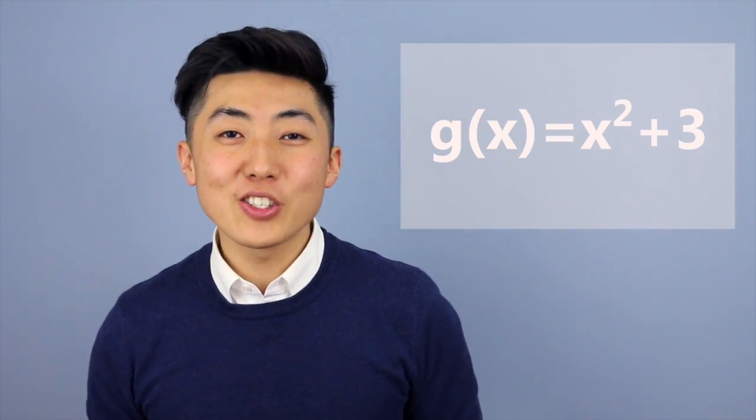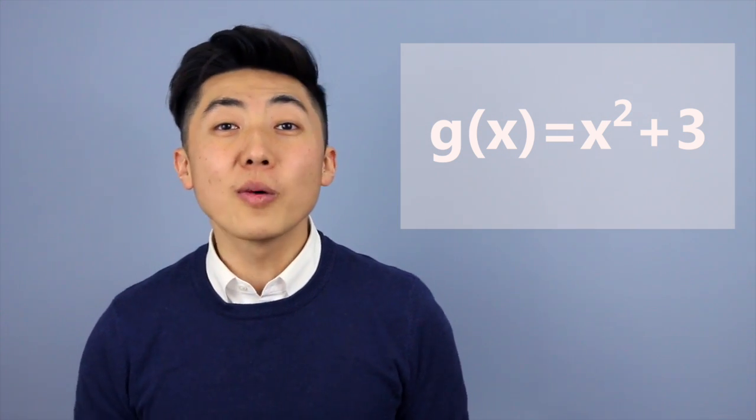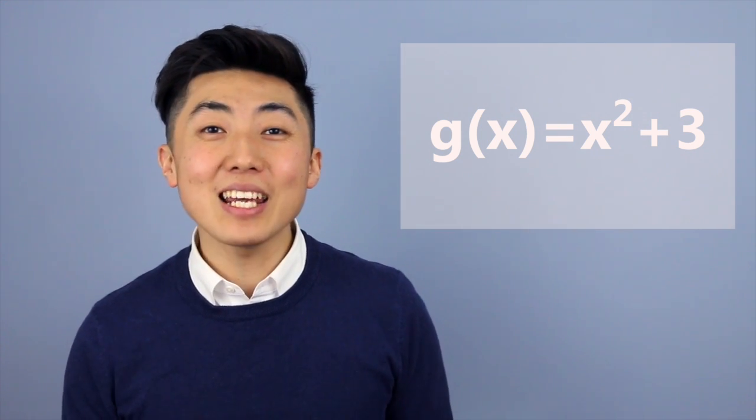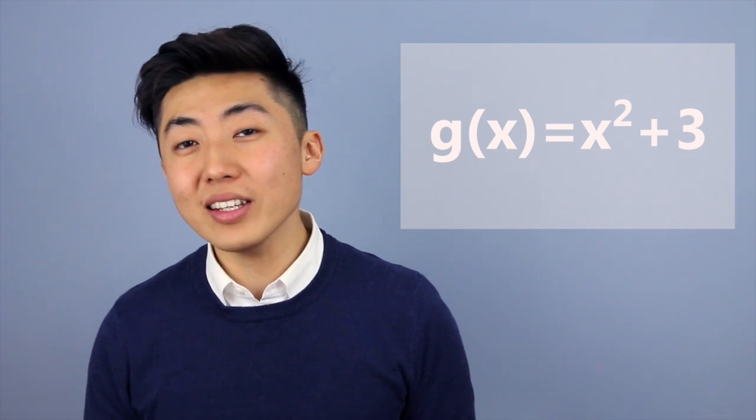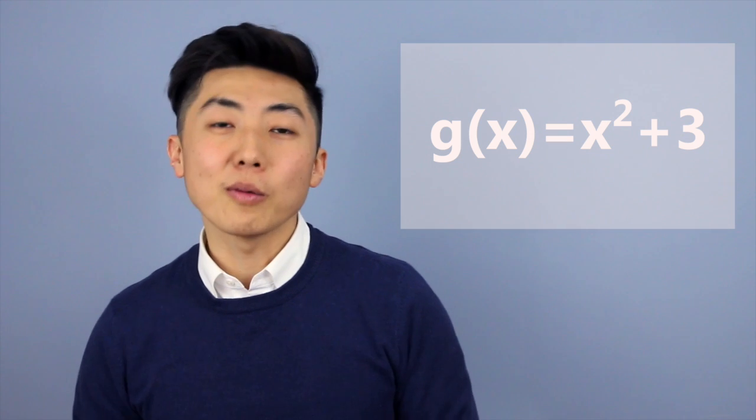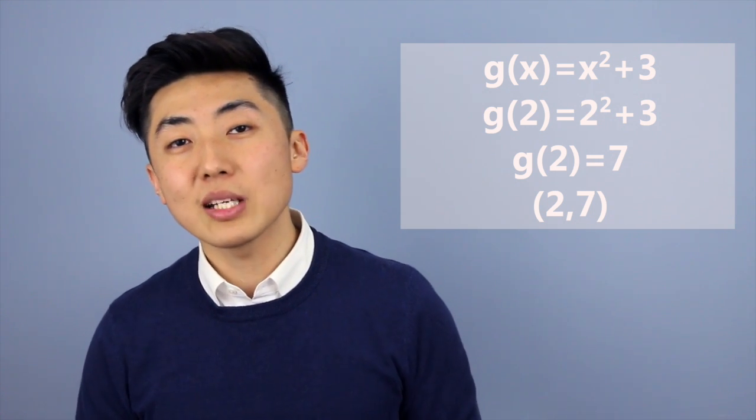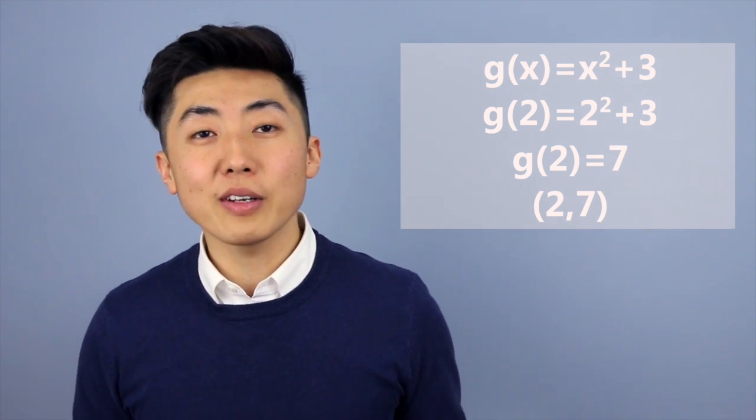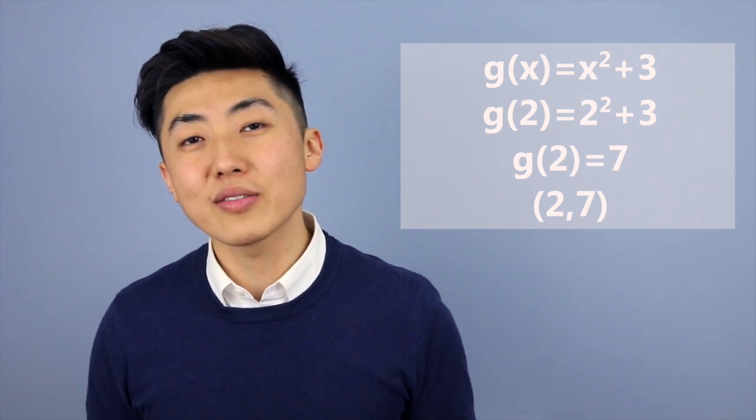So what about this function g of x is equal to x squared plus three? What does this mean? Well, this says our function g, and that's what it's called. It's just function g, has an input of x. And when we input this x, we're going to square it, then add three. So let's say I want to find g of two. Well, it says I'm going to square two, then add three. So I get two squared, which is four, plus three, is equal to seven. So g of two is equal to seven. It also means that an ordered pair, two comma seven, exists as part of this function.